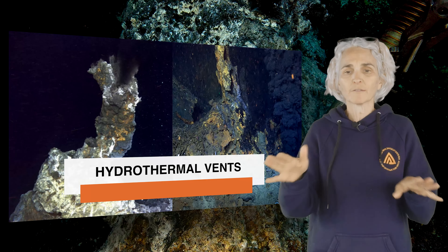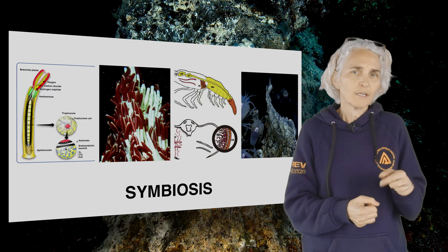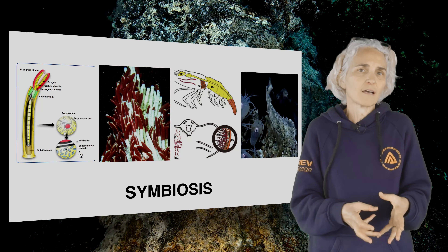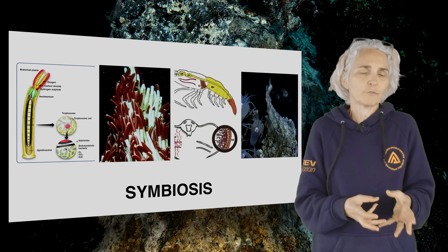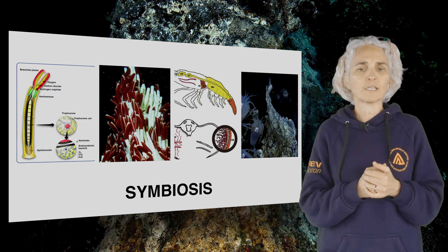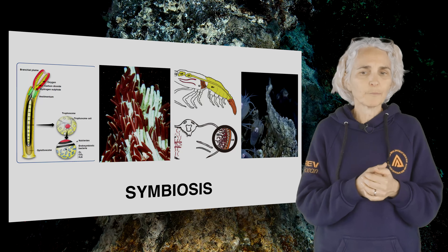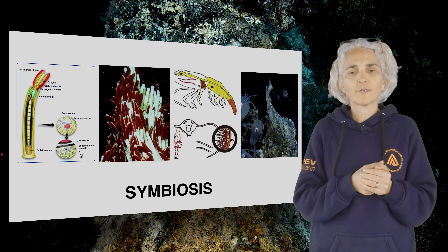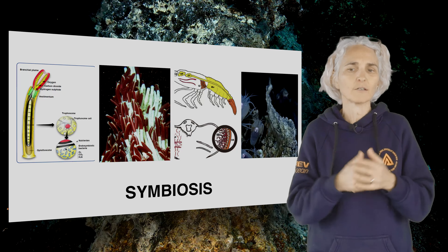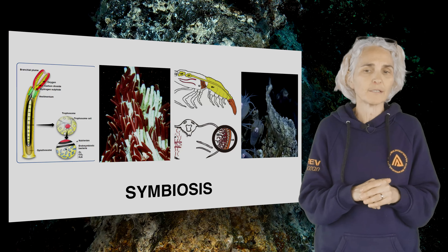Two examples of extreme symbiosis: the one on the left is Riftia pachyptila, a giant tube worm from East Pacific hydrothermal vents. This animal has no mouth or digestive system — instead it has an organ called a trophosome, essentially a sack full of bacteria. The animal intakes oxygen, carbon dioxide, and hydrogen sulfide from the black smoker fluids through its red plume, sends these to the trophosome, and the bacteria produce organic matter that feeds the worm. The other example is a shrimp from the Mid-Atlantic Ridge where the bacteria live in the gills, and the shrimp depends completely on these symbiotic bacteria for food.